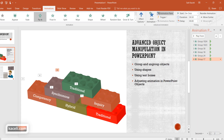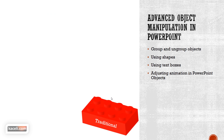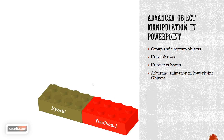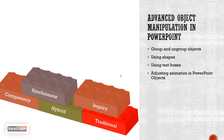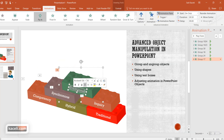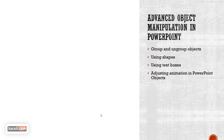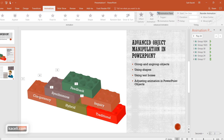Now if we play the presentation — we started from one Lego piece, added text, sorted layers with bring forward and send backward, and applied animations. When presented, each piece appears on a mouse click: first traditional education, then hybrid including online, then competency-based, then the different teaching methods. If you need to update a label, simply double-click it and change the text, and it will be updated when you replay the presentation. That is how it works: customize an image, add text, group them, and apply animation to each individual object.